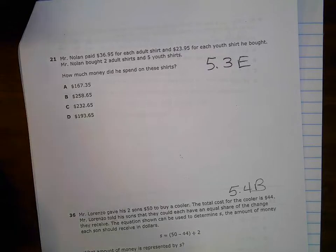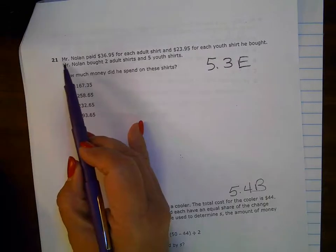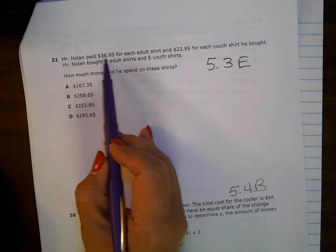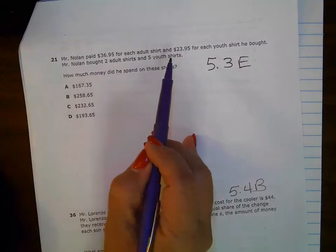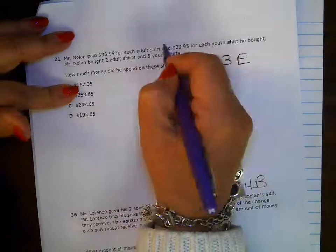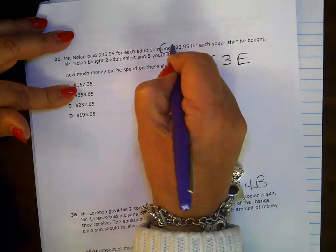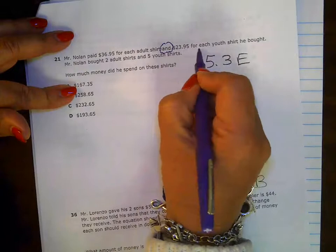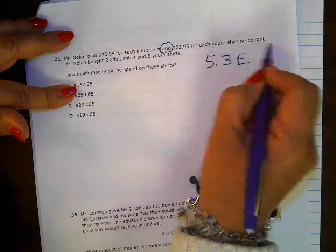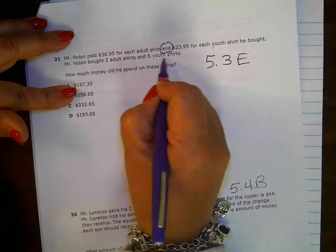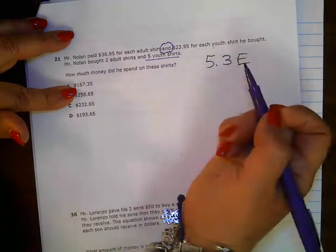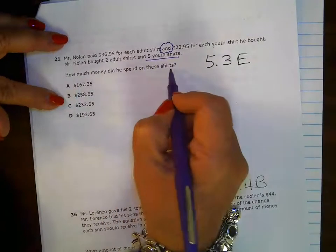Hey everyone, let's take a look at number 21. Mr. Nolan paid $36.95 for each adult shirt and $23.95 for each youth shirt he bought. Mr. Nolan bought two adult shirts and five youth shirts. How much money did he spend on these shirts?